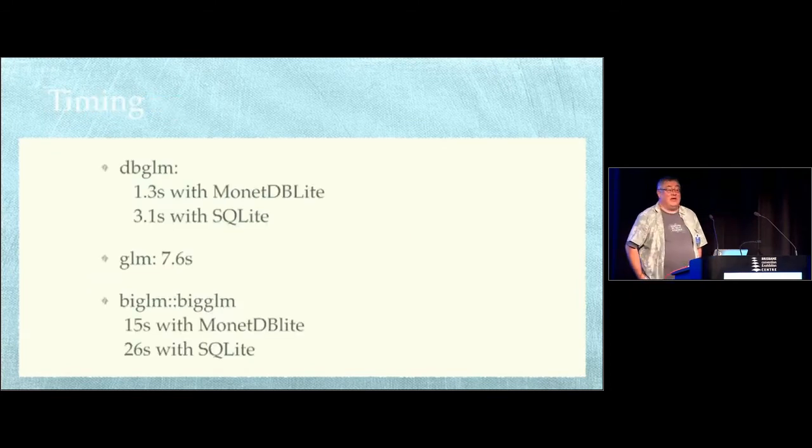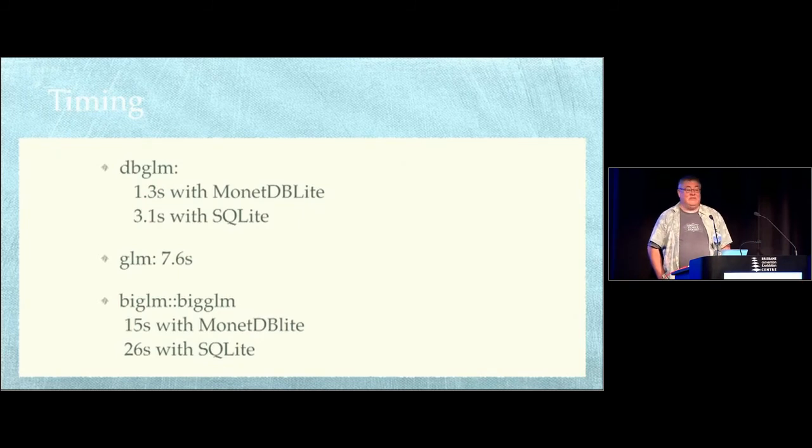So how does the timing work? Well, we've got using this DBGLM package. It takes about 1.3 seconds with MonetDB Lite as the database interface. If you don't know MonetDB Lite and you do large-scale computing, you should look it up. It's fast for scientific computing, optimised for scientific computing. 3.1 seconds with SQLite, which is optimised to being small and simple. In this case, we could read the whole data set into memory, even on my laptop, and it takes about seven or eight seconds. That's not counting the time to read the data in. Or we could read the data in chunks with the big LM package, and that's even slower. That does scale to arbitrarily big data sets, but it's slower, primarily because it has to do multiple iterations, whereas DBGLM only does one.